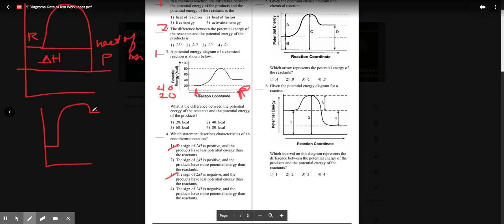Delta H is always products minus reactants. Let's say this is 10, 20, 30, 40. 40 minus 20 is 20, that's a positive Delta H for any endothermic, so that is choice two.